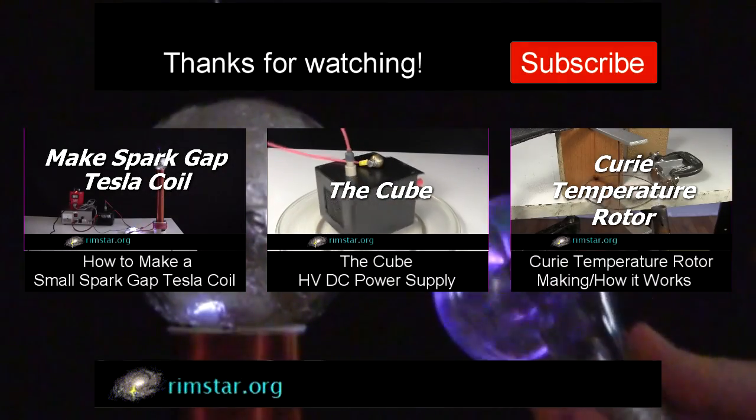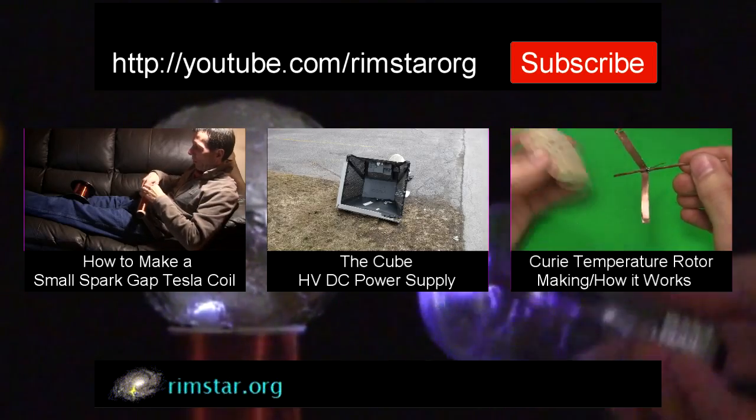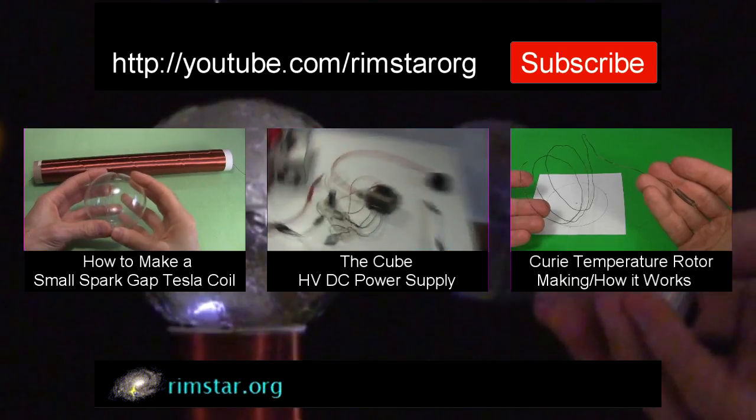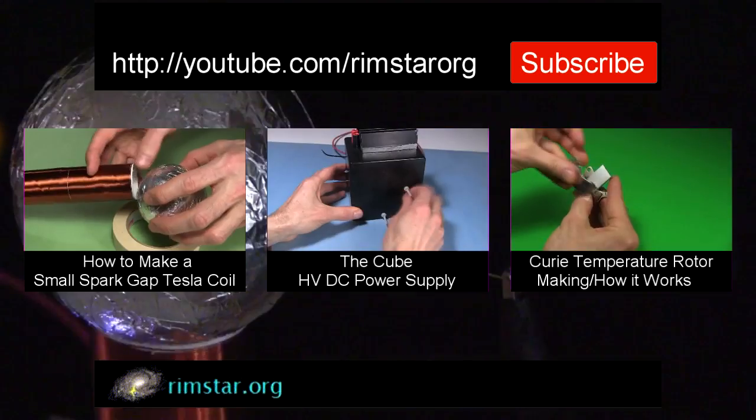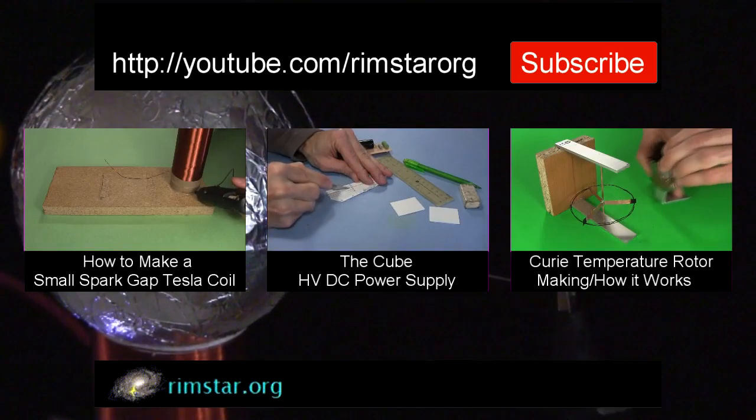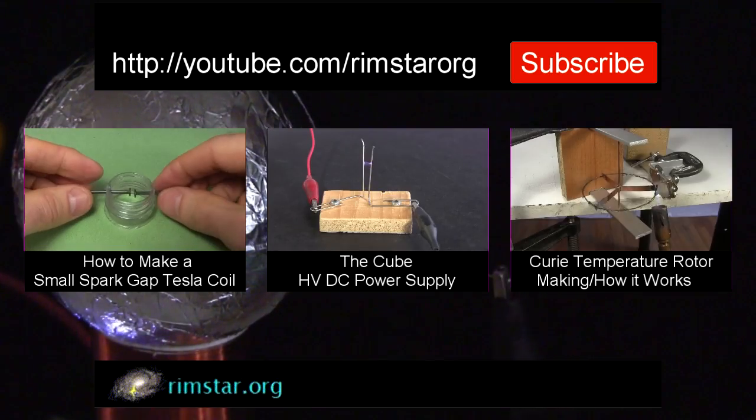Well, thanks for watching. See my YouTube channel Rimstar Org for more interesting videos like this. That includes one showing step by step how to make this small Tesla coil, another demonstrating my cube power supply doing other things. And for variety, one about a rotor spun using a propane torch and the Curie temperature.